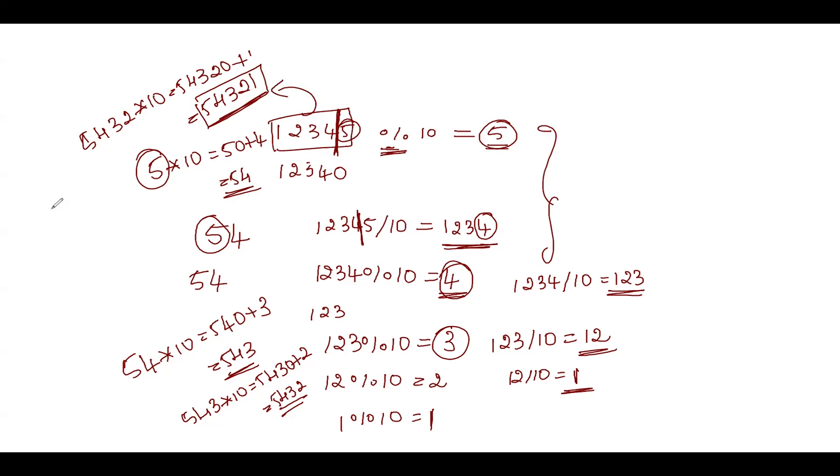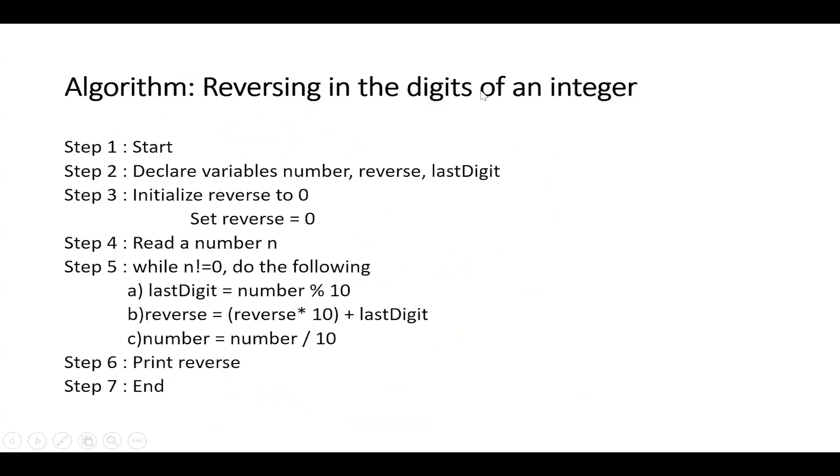So we have started from this and we have reached here. In order to do that, we have used mod operation and we have used the divide operations and also we have used the multiplication. So let us see the algorithm. We will declare the variables number, reverse, and last digit. So I have number, reverse, I will write a short form, and I have last digit. So initialize reverse to 0. Reverse is where we are going to multiply with 10 and save the digits. And last digit is where we are going to perform the mod operations and save those digits, and number is where the actual value is. Now it says read a number n. Let us read a different number 535, 534.